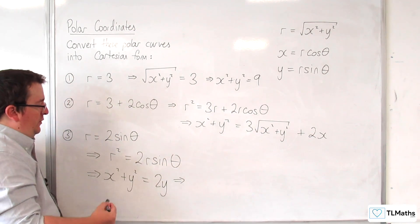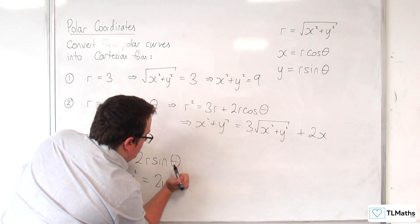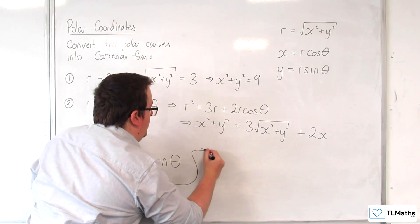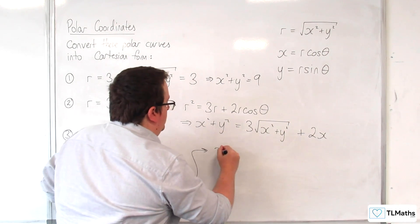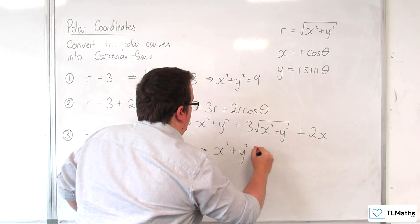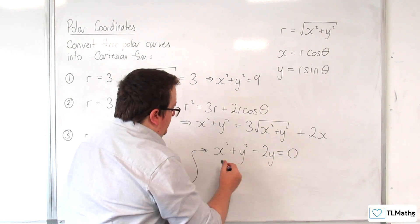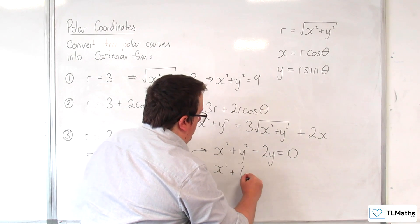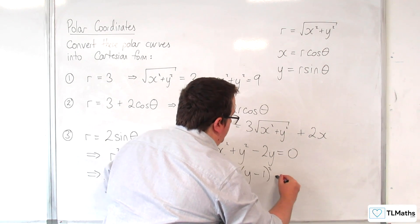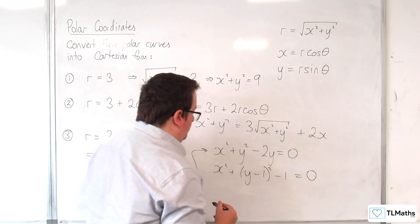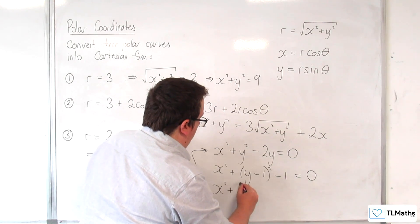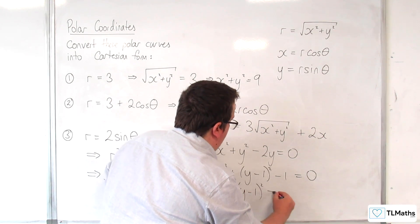Now if we subtract the 2y from both sides, so let's give myself a little bit more space. So x squared plus y squared minus 2y equals 0. Let's complete the square on this part. x squared plus y minus 1 squared, take away 1, equals 0. x squared plus y minus 1 squared equals 1.